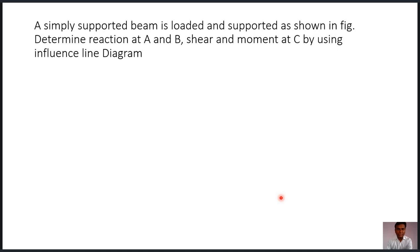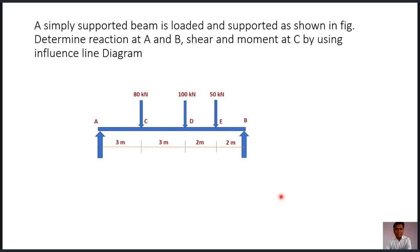Now let us study some examples on influence line diagrams and how we can apply the influence line diagram to find out the reactions for any given example. The influence line diagrams are applicable for a live load, but initially we can find out the reactions for static loads. The example is: a simply supported beam is loaded and supported as shown in the figure. We have to determine reaction at A and reaction at B, then shear and bending moment at a point C using influence line diagram.